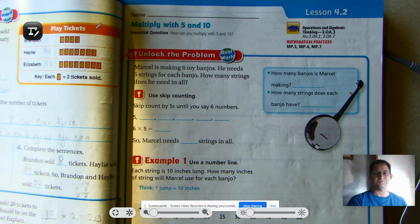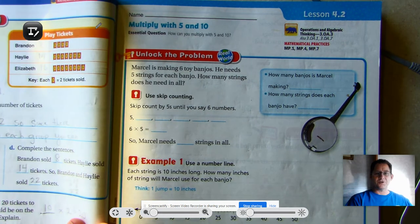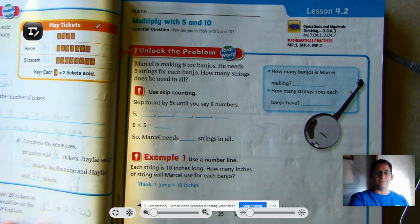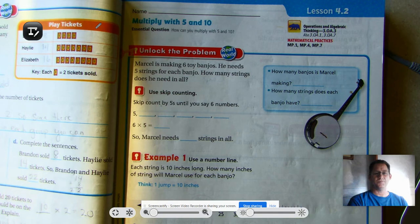The essential question is basically how can you multiply with 5 and 10? So let's look at the unlock the problem. Marcel is making six toy banjos. He needs five strings for each banjo. How many strings does he need in all?